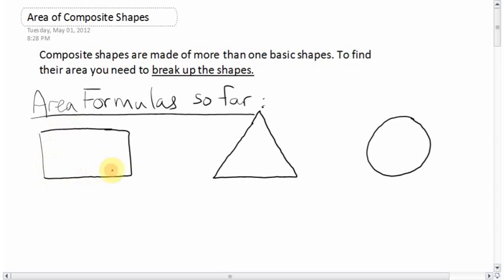For a rectangle, square, or parallelogram, area equals base times height. For a triangle, its area equals base times height divided by 2, because a triangle is half of a rectangle or square. And for the circle, the area is pi times the radius squared.